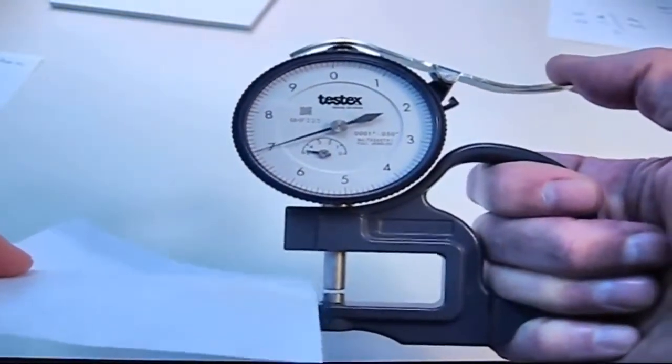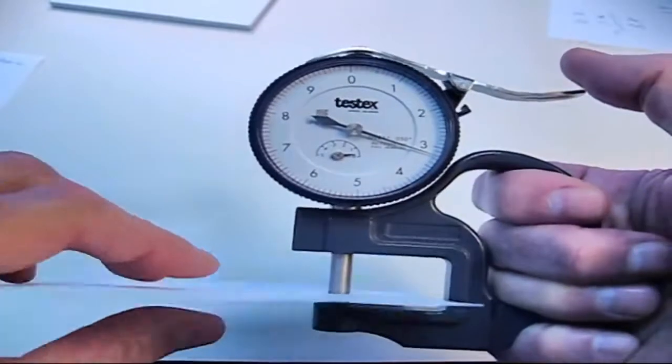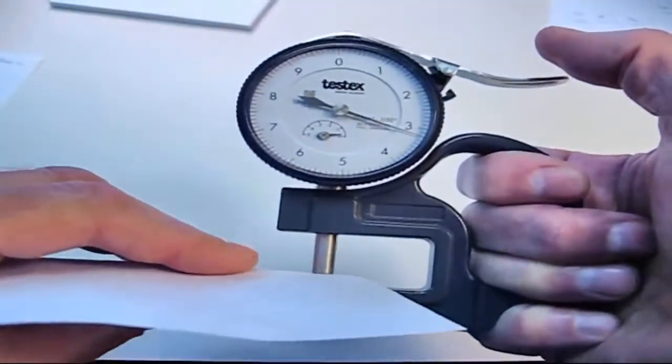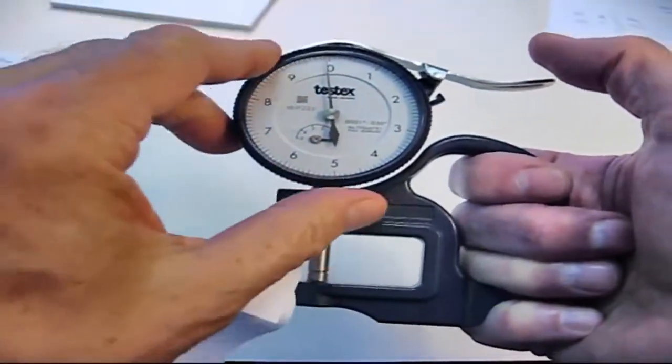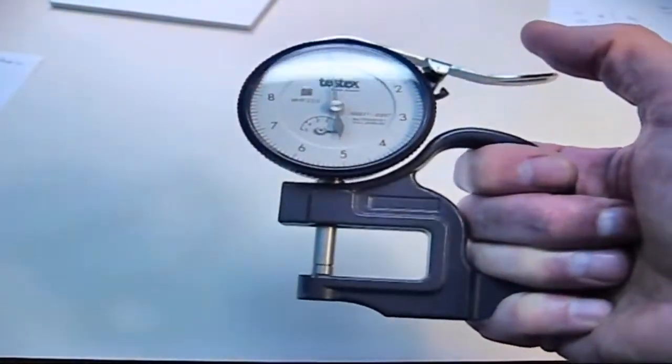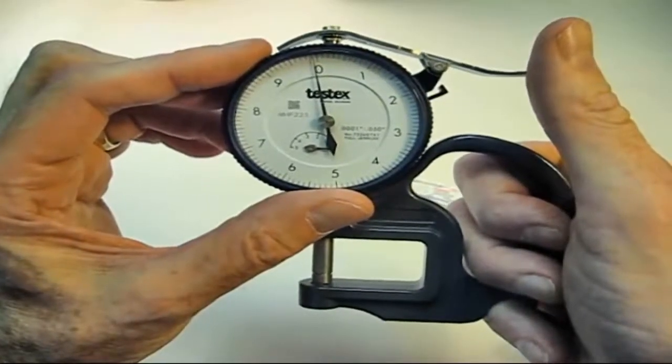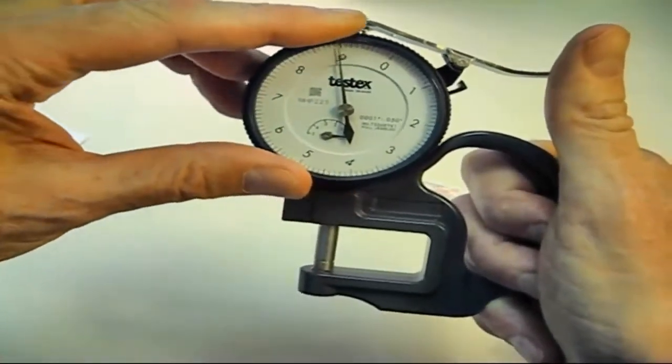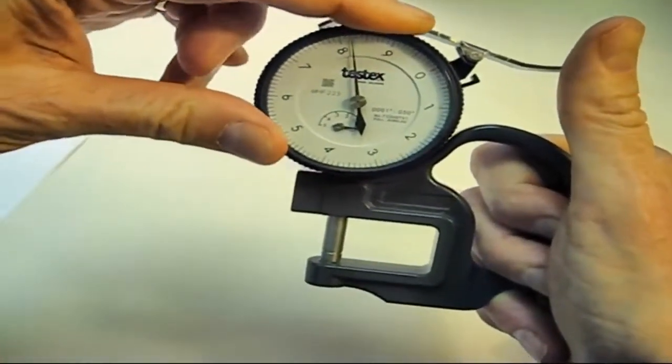This is as simple as first making sure the anvil and contact surface are clean, and then presetting the gauge to subtract the thickness of the incompressible layer. On an inch gauge, this means presetting to minus 2 mils, or plus 8 mils.